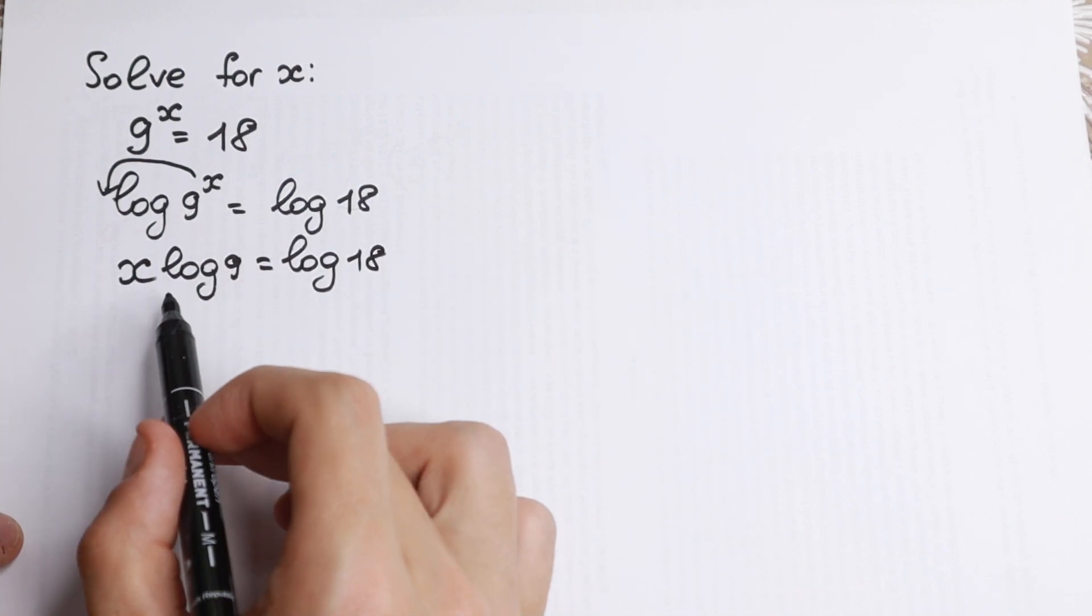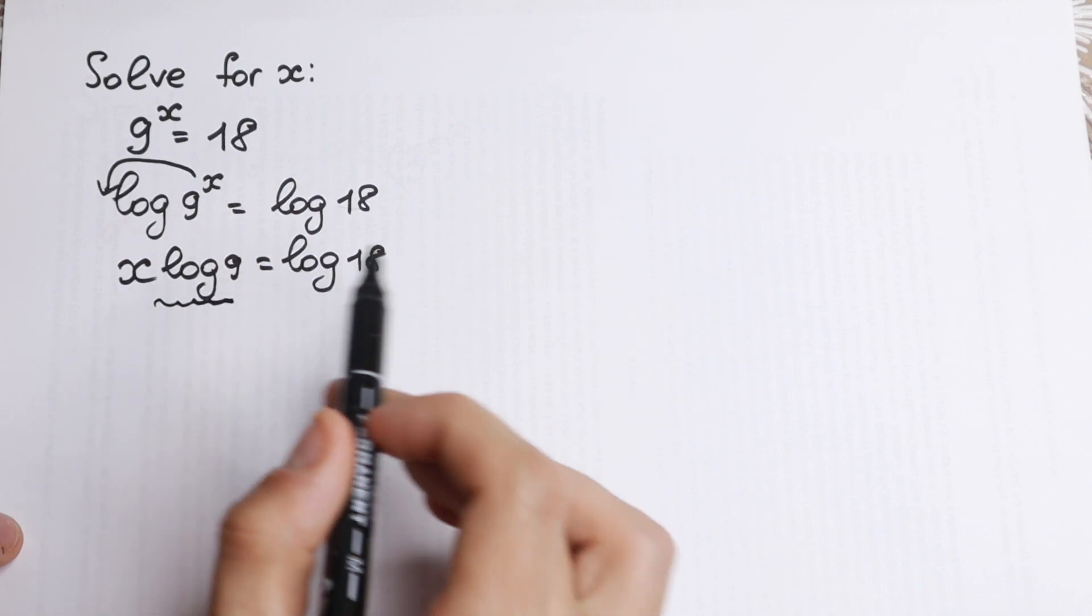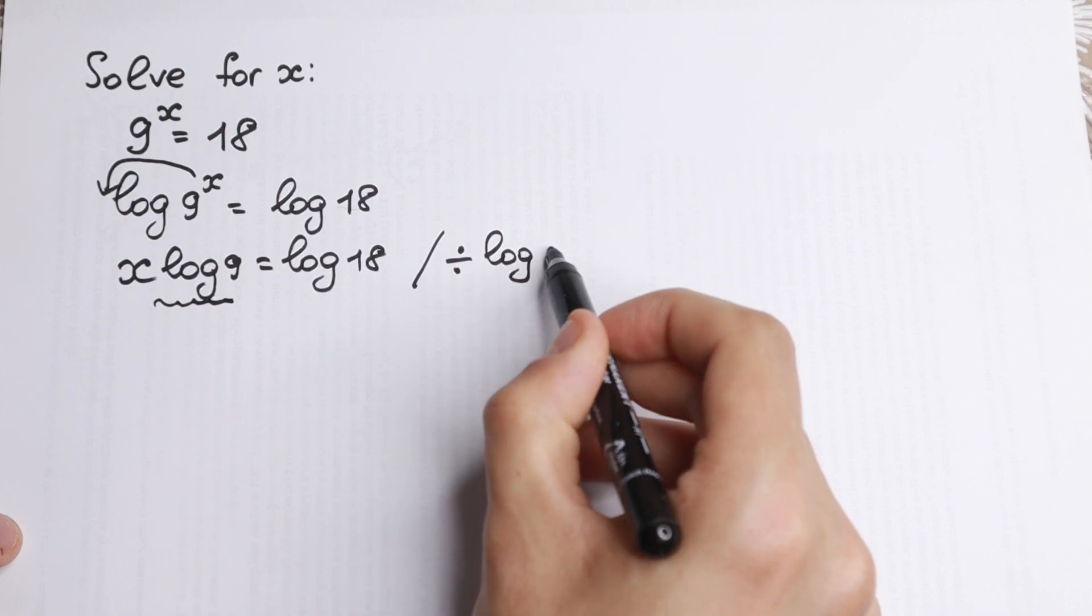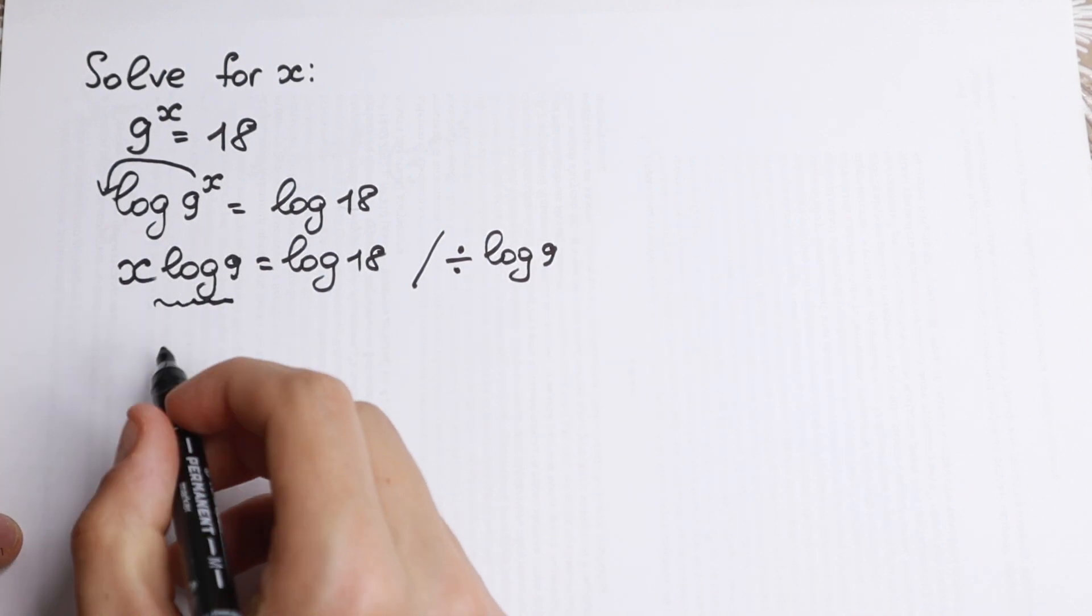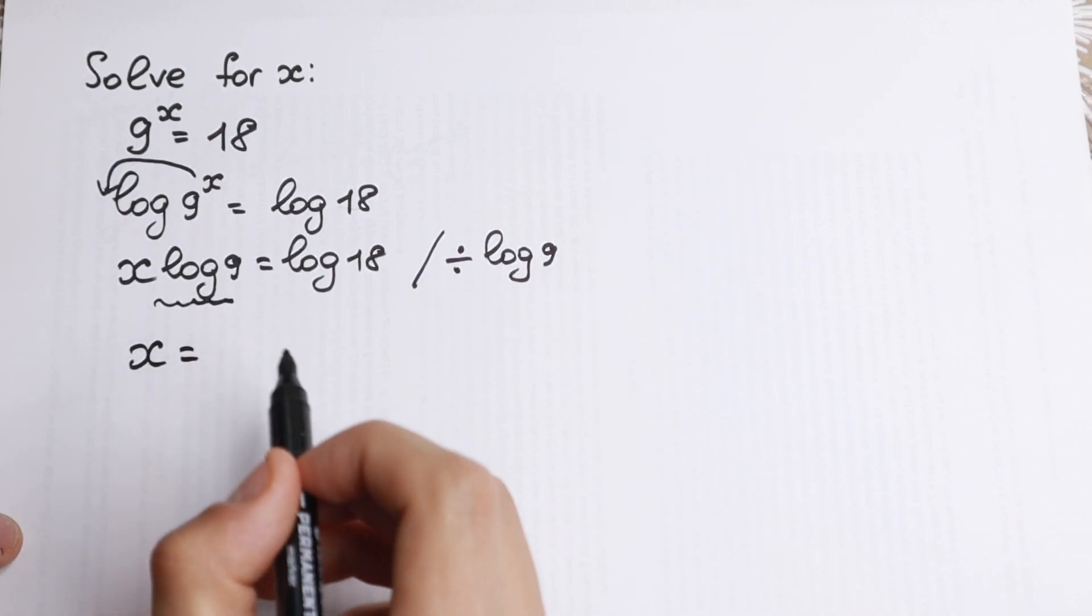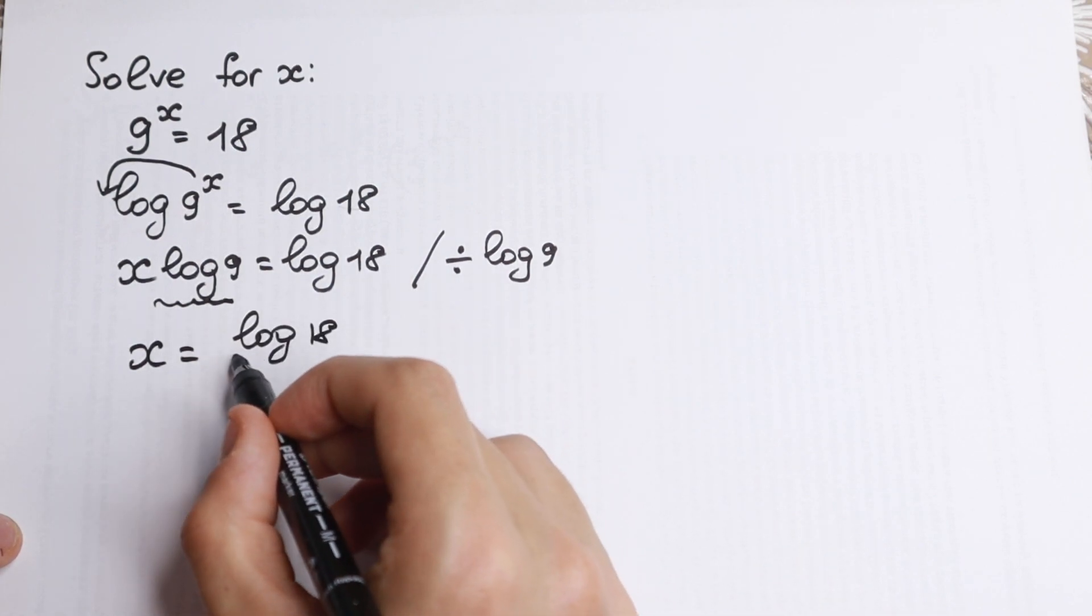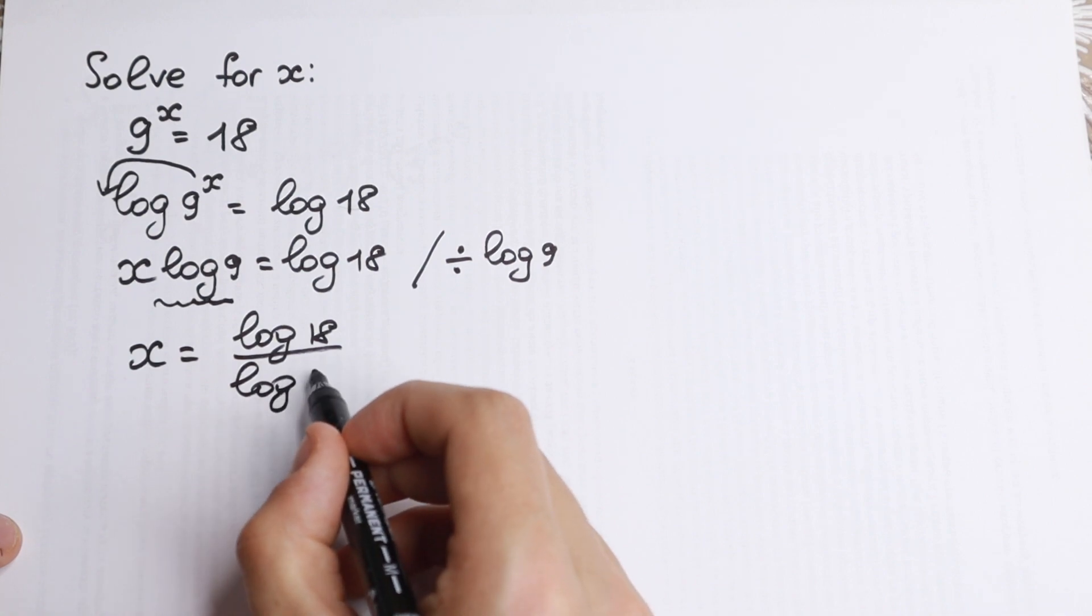What are we going to do next? This is a constant, so we can easily divide it. This is not equal to 0, so we can divide both sides by log 9. If we divide from here, we cancel this, so as a result we'll have only our x, and right here we will have log 18 over log 9. And this will be our answer.